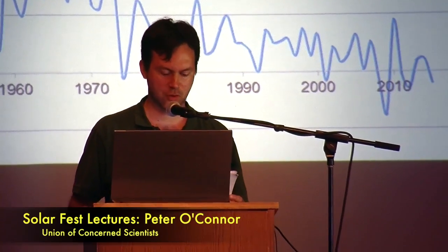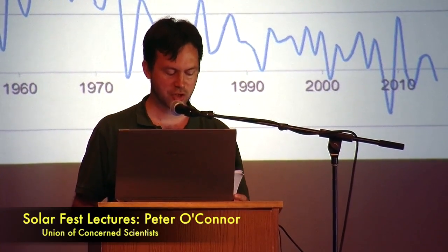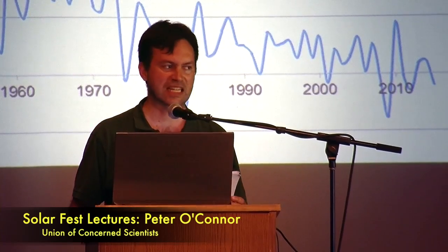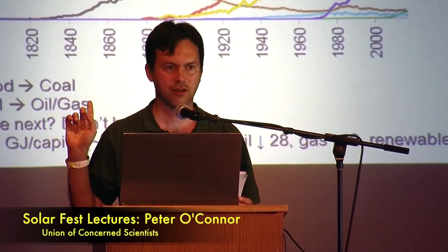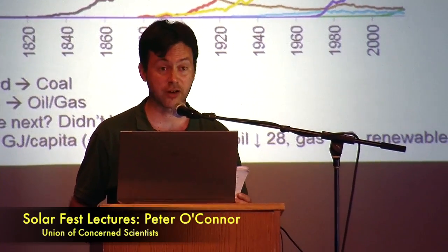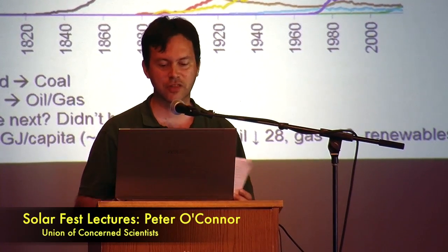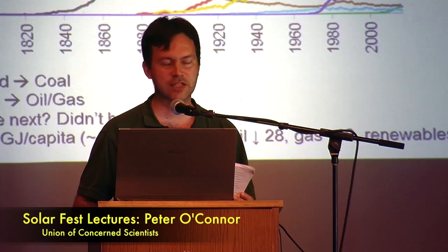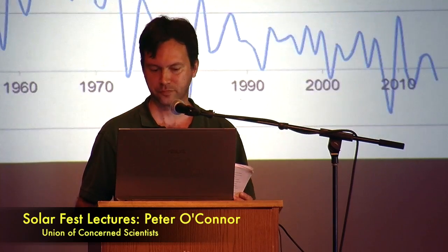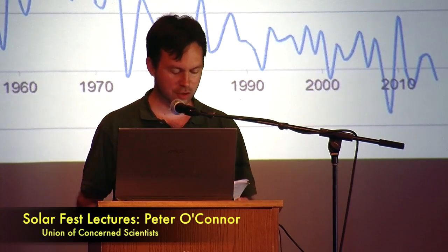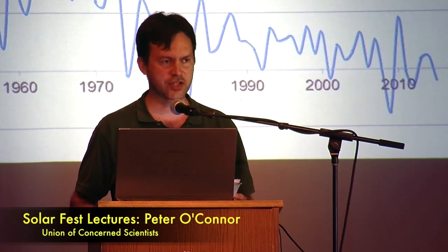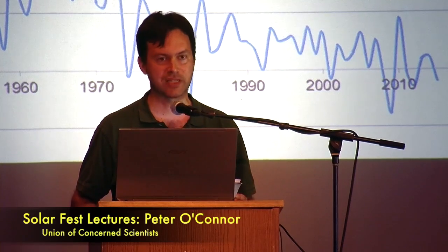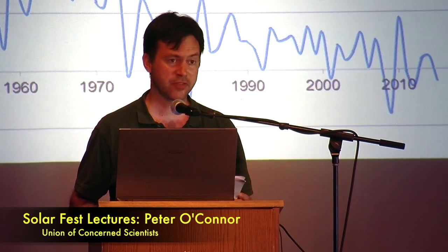An invisible resource — energy efficiency — took over where nuclear had been expected to take over. You can't see efficiency on a chart of different shares; it's only the invisible reason for this decline. So efficiency took over. They canceled a lot of orders for nuclear plants. It had grassroots opposition as well, but conservation and efficiency made those plants redundant and unnecessary, and so they were canceled.